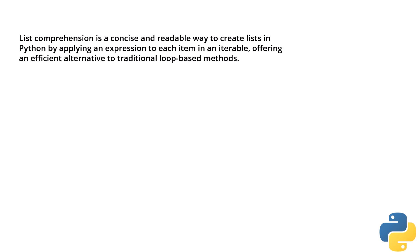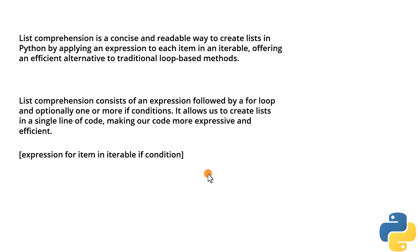List comprehension is a compact way to create a list in Python by applying an expression to each item in an iterable. It provides a more concise and readable alternative to the traditional method of creating lists using loops. List comprehension consists of an expression followed by a loop, and optionally one or more if conditions, allowing us to create lists in a single line of code. The syntax is: the expression, then for an item in iterable, with an optional if condition at the end.